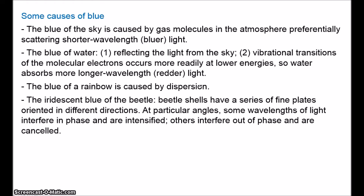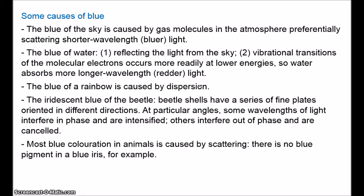Consider iridescent colours that you can see on the bodies of some beetles. The main cause is that beetle shells have a series of very fine plates or ridges oriented in different directions. At particular angles, some wavelengths of light interfere in phase and are intensified, while other wavelengths interfere out of phase and are cancelled. The colour you see is dependent on the angle of viewing. Beetles also have a layer of pigment below the plates that enhances the colours.